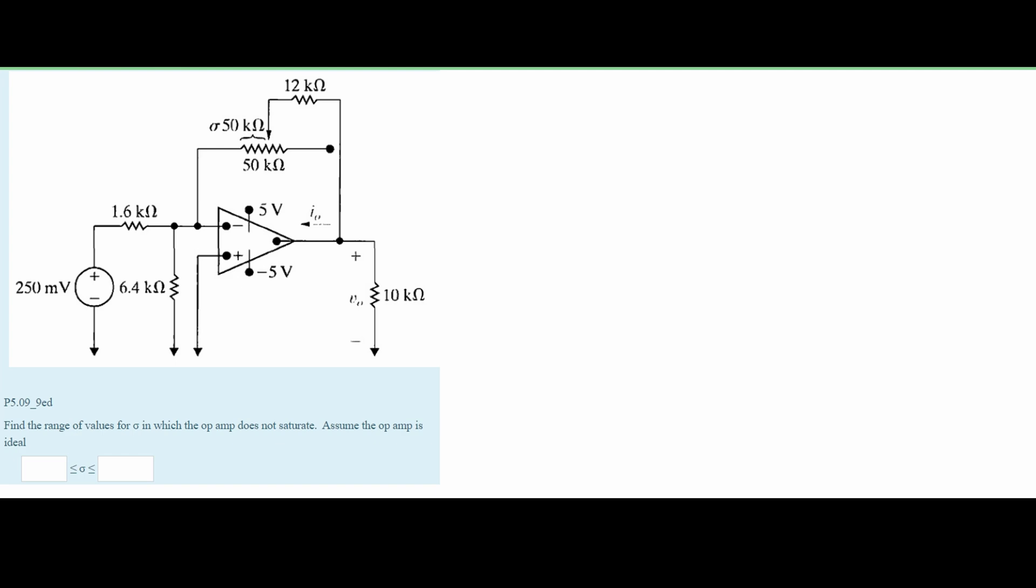In this circuit diagram, we're asked to find the range of values for alpha in which the op amp does not saturate. Assume the op amp is ideal.